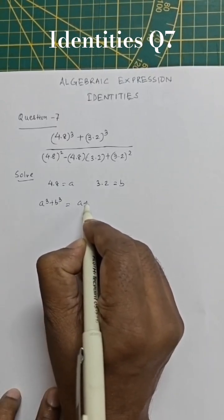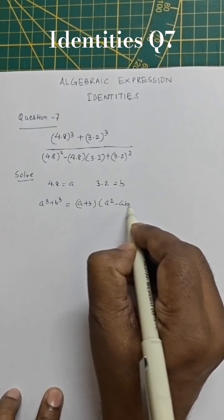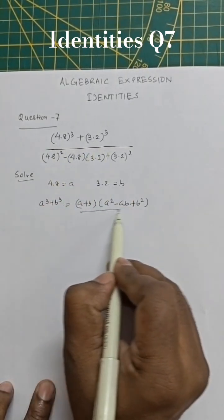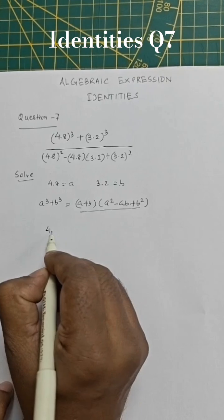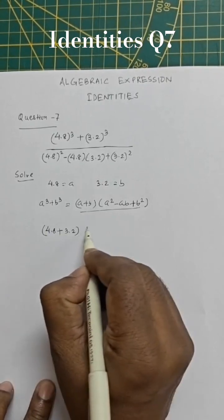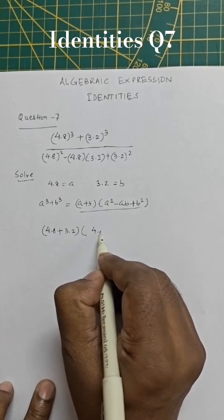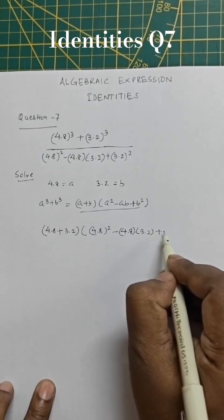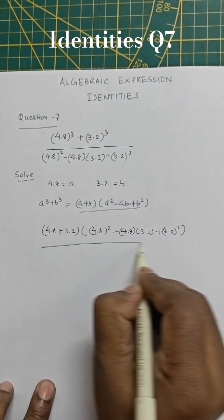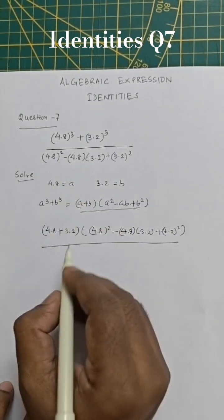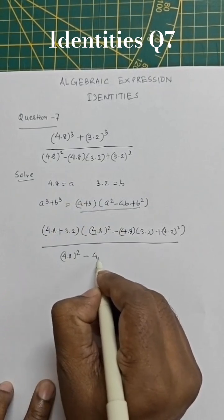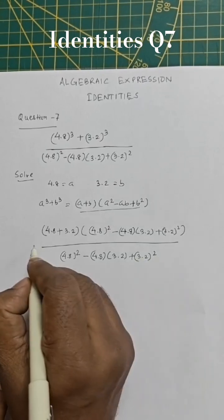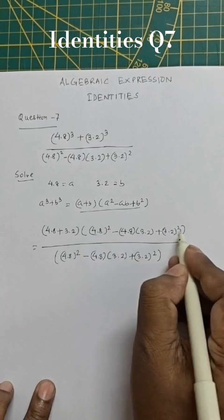That equals a plus b into a square minus ab plus b square. So let's substitute: a cube plus b cube becomes 4.8 plus 3.2 into 4.8 whole square minus 4.8 into 3.2 plus 3.2 whole square, divided by 4.8 whole square minus 4.8 into 3.2 plus 3.2 whole square.